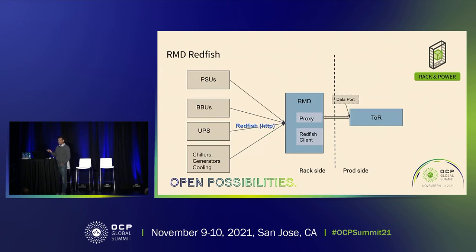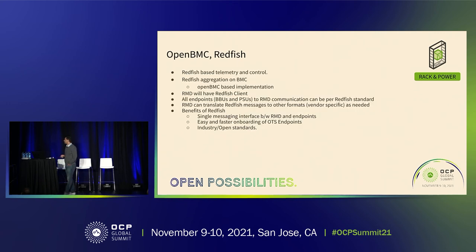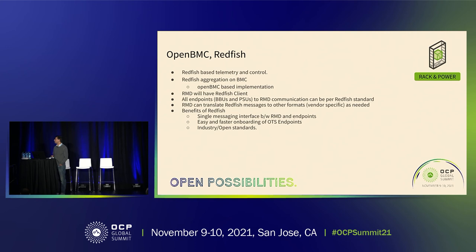This shows the rack-side and prod-side network. All PSU, BBU, UPS, chillers, and generators are on the rack-side private network, connected to RMD. RMD runs a security proxy, potentially a DHCP server for private IPs, and a Redfish client that aggregates everything. It connects via the data port of the ToR and sends to the prod-side network. Why Redfish? It is a single messaging interface between RMD and endpoints, enabling easy and faster onboarding of off-the-shelf endpoints. It is an industry standard we're aligning with from the software perspective. Endpoints talk Redfish; RMD can translate to other formats as needed — this is where the extra CPU helps.